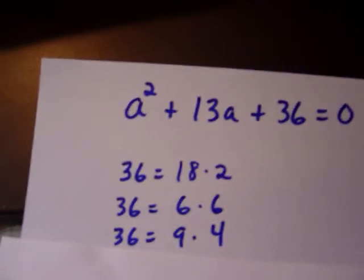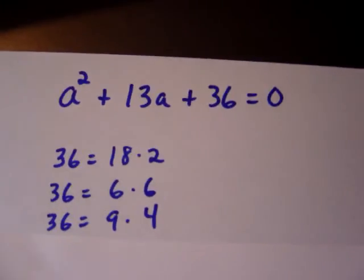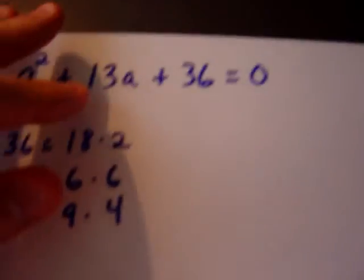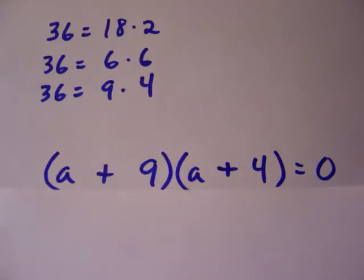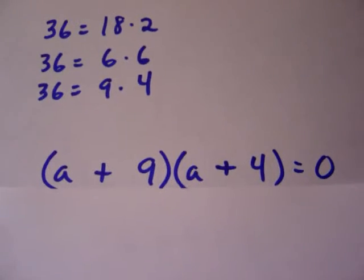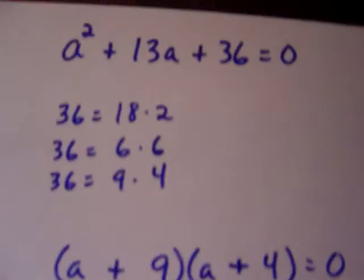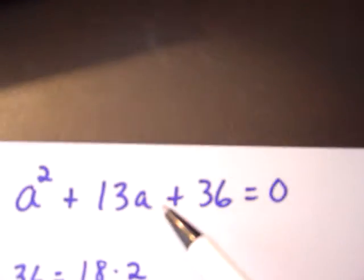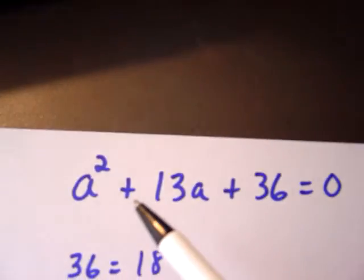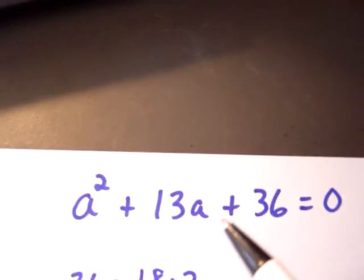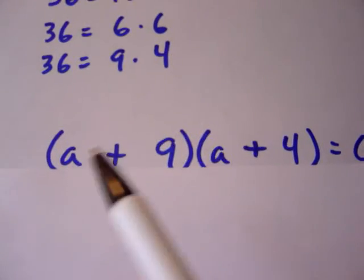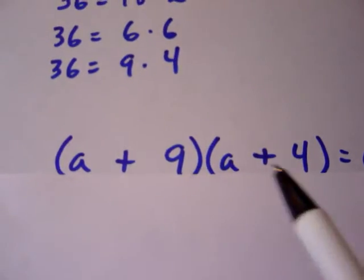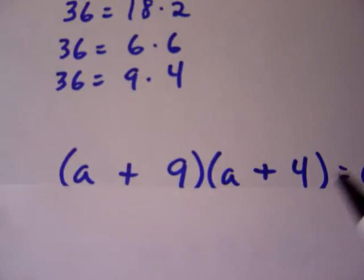We're going to work with 9 and 4. Breaking this thing up into two binomials, we have a plus 9 times the quantity a plus 4. Notice that our 36 was positive and our middle term was positive. The only way you can multiply and get positive, and add and get positive, is if both terms — both binomials — are positive.